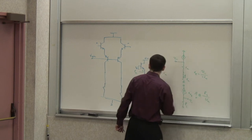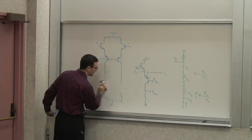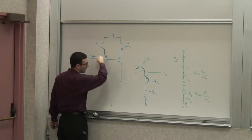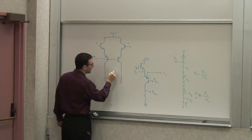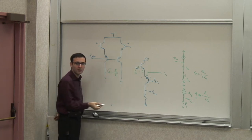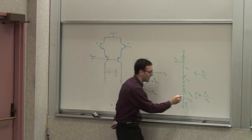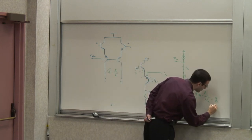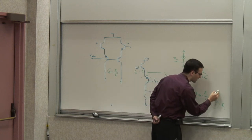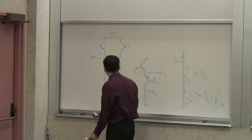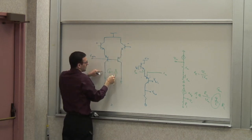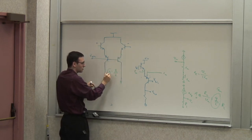The transconductance of this stage — if you think about it as a current output — the capital GM of this whole thing is going to be GM over 2. You can rewrite this as GM over 2 times R_L. So this is the effective transconductance of this stage. If you put a differential voltage here, it turns it into a differential current with this ratio — multiplied by GM over 2.